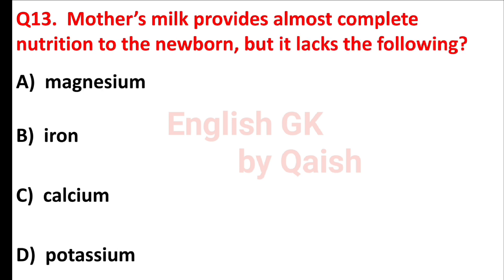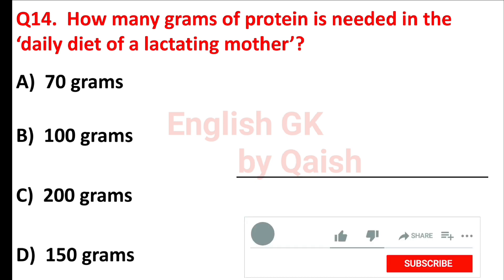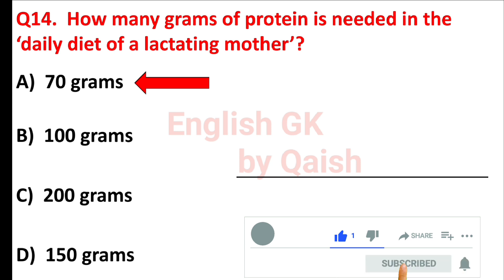Mother's milk provides almost complete nutrition to the newborn, but it lacks the following. Answer is option B, iron. How many grams of protein is needed in the daily diet of a lactating mother? Answer is option A, 70 grams.